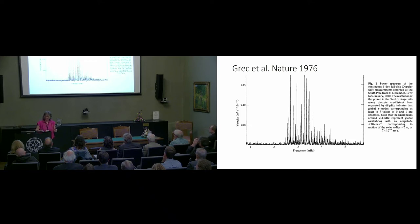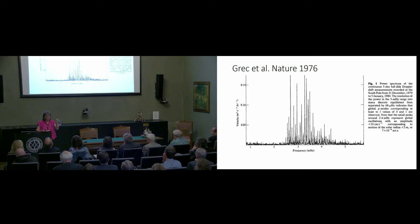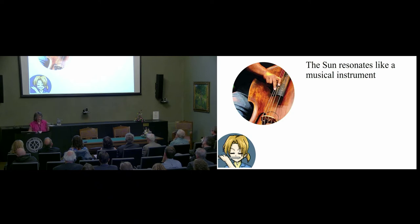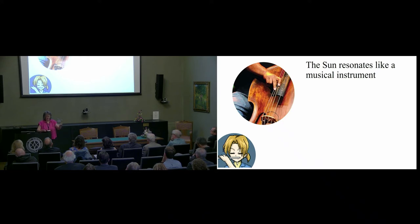You have to remember that the concept that sound waves could travel all the way through the Sun, come back, and do it again and again — people just thought it wasn't reasonable, that the interior conditions were so turbulent you couldn't possibly get a coherent signal. And yet that was what was seen. The Grec–Fossat–Pomerantz papers show beautiful sharp lines. From the width of the line you can estimate the lifetime — you're seeing 3 millihertz, five-minute periods, and the line width tells you the modes have a lifetime of days. These are really high-Q resonances.